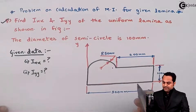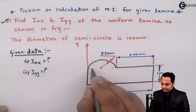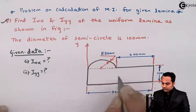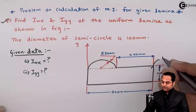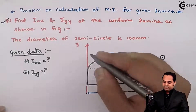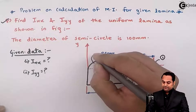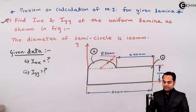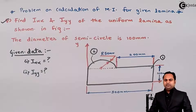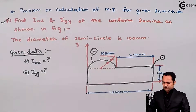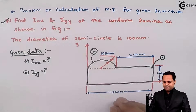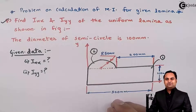Looking at the diagram, the lamina can be divided into one rectangle and one semicircle. The rectangle will be area one and the semicircle will be area two. We need to find the moment of inertia for this composite section, and for that we first need to find the location of the centroid.